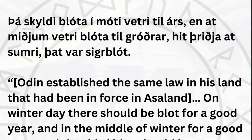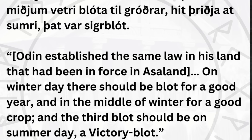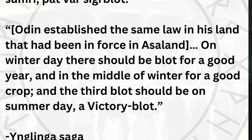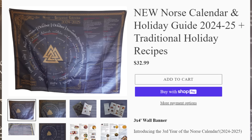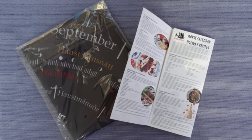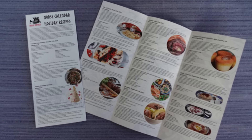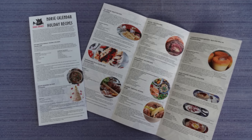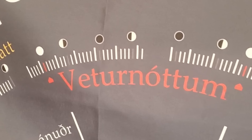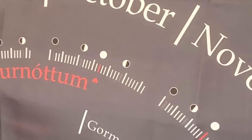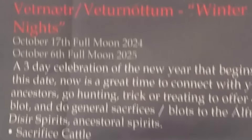So to start off, Happy Norse New Year! As I will go over in a minute, Vetternätter — the full moon of October — is the Norse Pagan New Year. And as usual, I have just dropped a Norse calendar with all of our holidays, with a brand new addition this year: a recipe book of traditional Scandinavian dishes to go along with each holiday. It's a banner like you see behind me, but you can also get a digital download for just $5. That's all on the shop now and I'll put a link below.